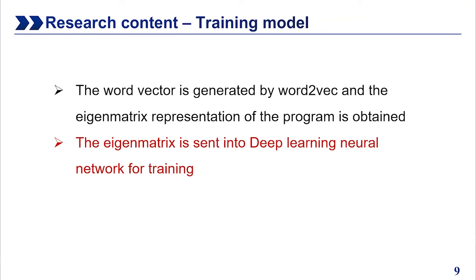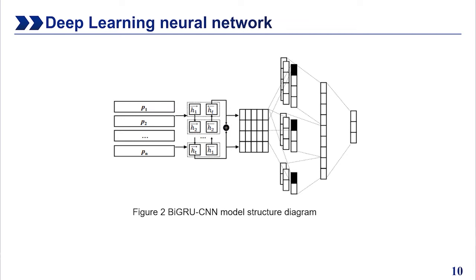Next, the model training part. The word vector is generated by word2vec, and the representation of the program is obtained. The representation is sent into a deep learning network for training. This is the BiGRU model diagram; see Section 3.3 for details.